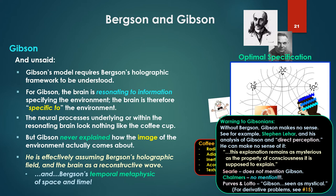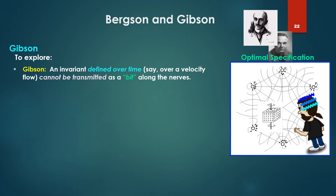There's a warning to Gibsonians here. Without Bergson, Gibson makes no sense. See, for example, Stephen Lehar and his analysis of Gibson and direct perception. He can make no sense of it. To quote, 'this explanation remains as mysterious as the property of consciousness that is supposed to explain', that is, our experience of the external world, the coffee cup. Inexplicable in Gibson without Bergson framework. He's joined, for example, as we noted by Searle, who's attacking the theory of direct perception and has not even mentioned Gibson. Chalmers, no mention. Purvis and Lotto, two very influential theorists of color in the perception external world. According to them, Gibson is seen as mystical. For derivative problems due to this failure to acknowledge Bergson in scene number 15. For the whole notion of cognition and thought and memory is debilitated because of this.